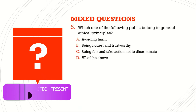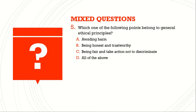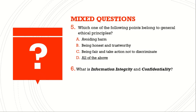Question number five: Which one of the following points belongs to general ethical principles? Options include: avoiding harm, being honest and trustworthy, being fair and taking action not to discriminate, or all of the above. Answer: All of the above. Question number six: What is information integrity and confidentiality?